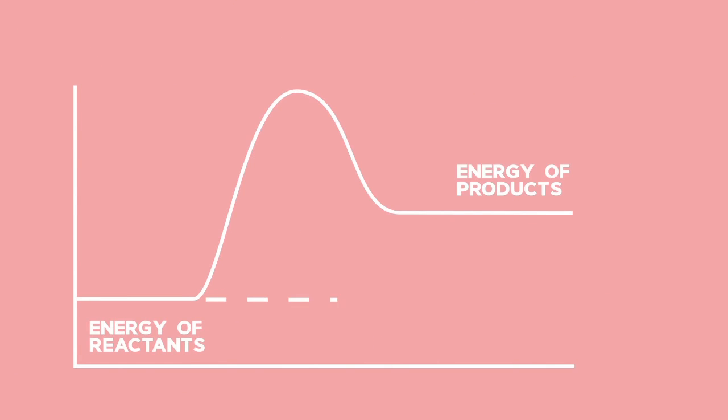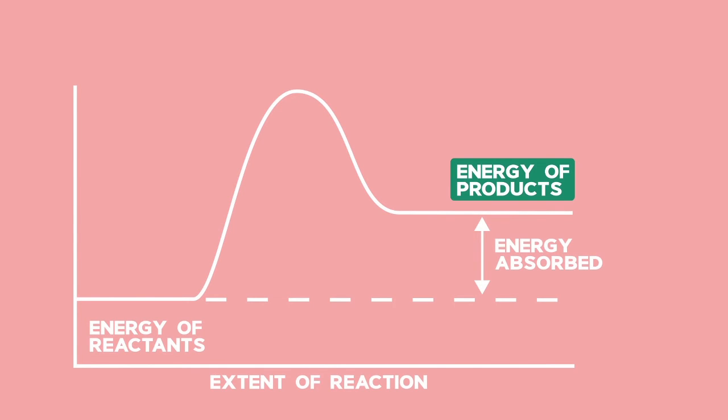The graph represents an endothermic reaction. As may be seen, the products have more energy than the reactants so the value of delta H will be positive. An endothermic reaction may be described as one in which there is a net absorption of energy.